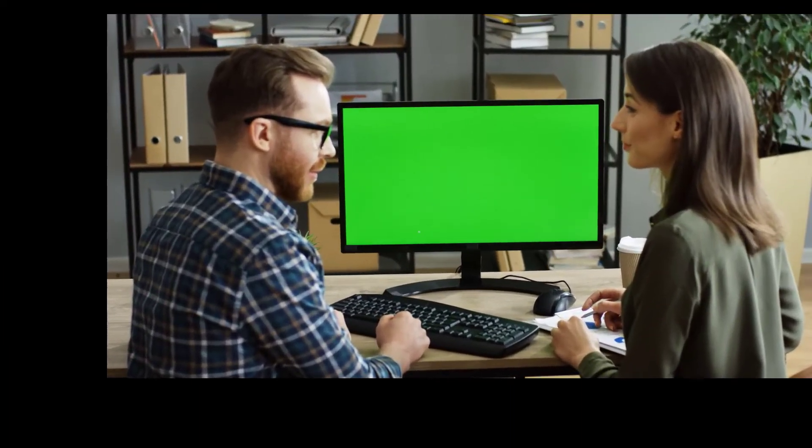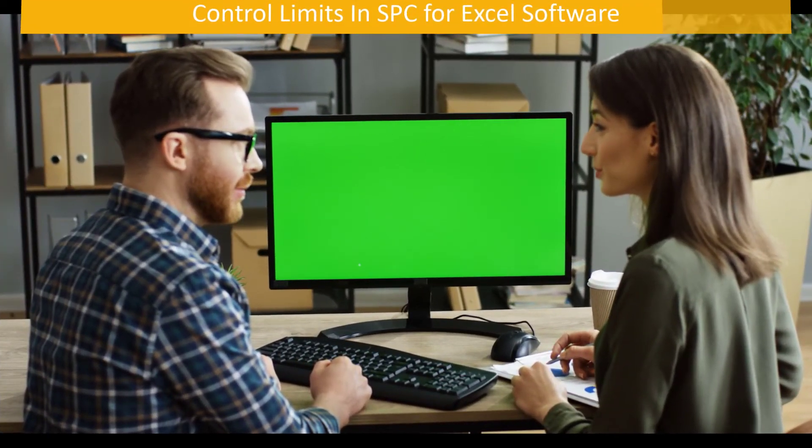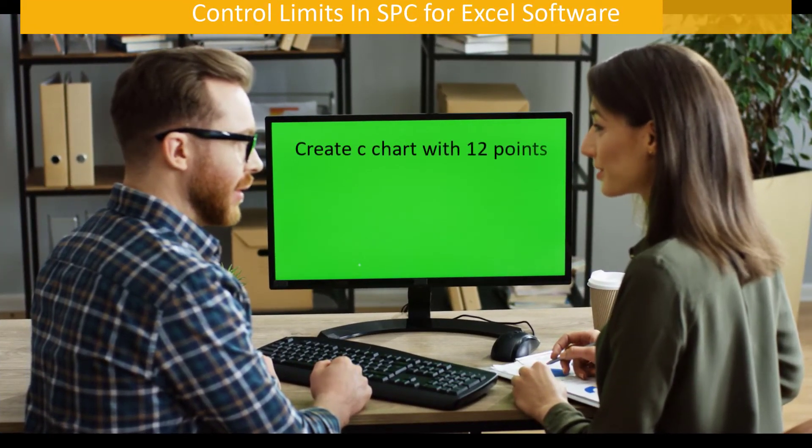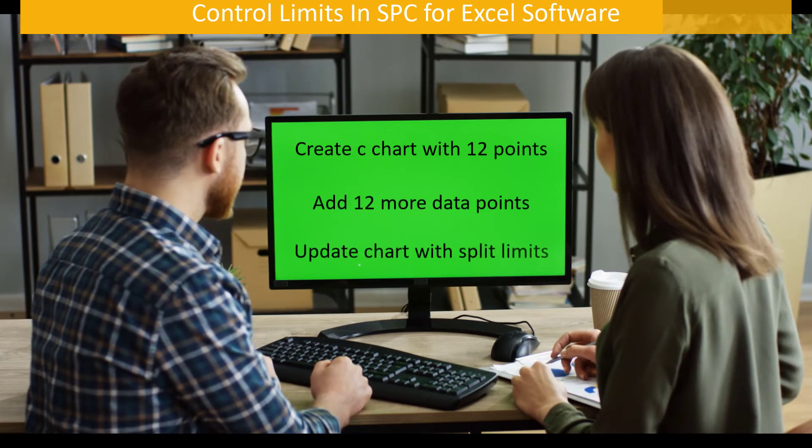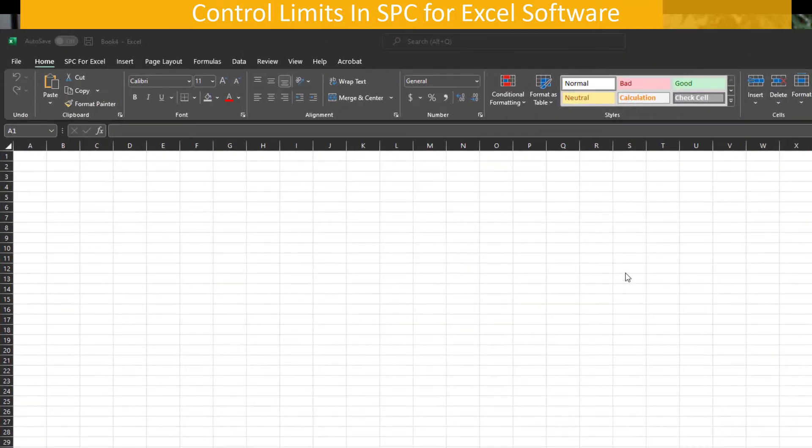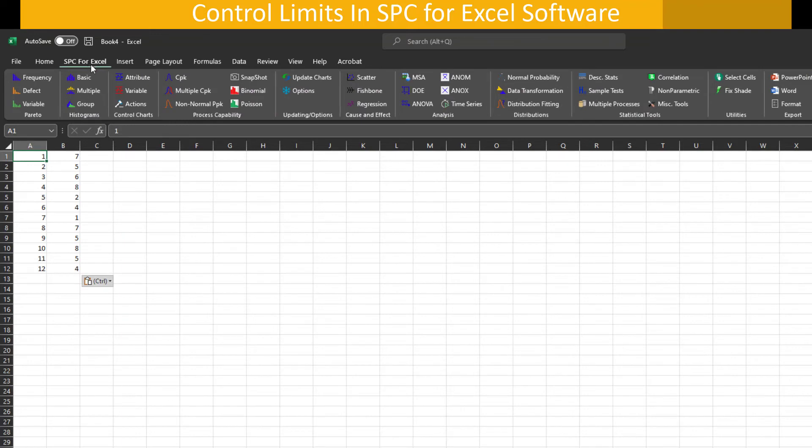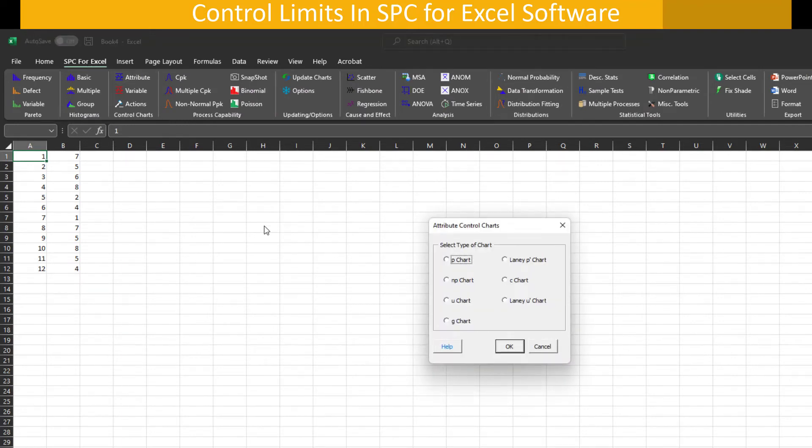Let's take a look at how control limits work in the SPC for Excel software. Here we're going to look at that C chart again with 12 points. We're going to add 12 more data points to it and update the charts with the split control limits. So the first thing you do is you enter your data into an Excel spreadsheet. Here we'll have our month values in column A, and column B will be the number of OSHA recordables per month.